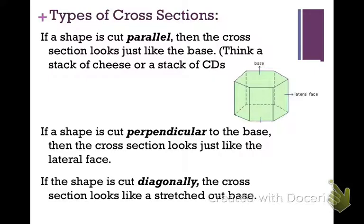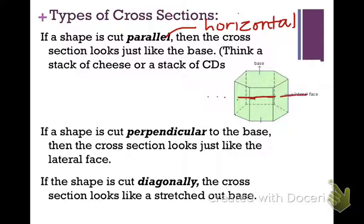If the shape is cut parallel, then the cross section looks just like the base — think of it as a stack of cheese or a stack of CDs. That would be the parallel, or horizontal, cross section. If the shape is cut perpendicular to the base, we'll call this the vertical cross section — perpendicular to the base.